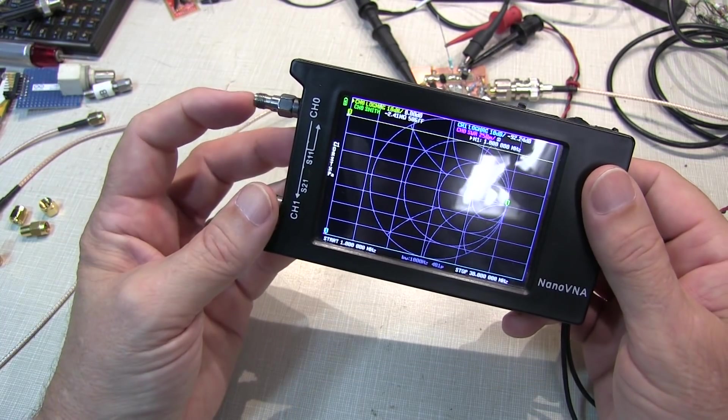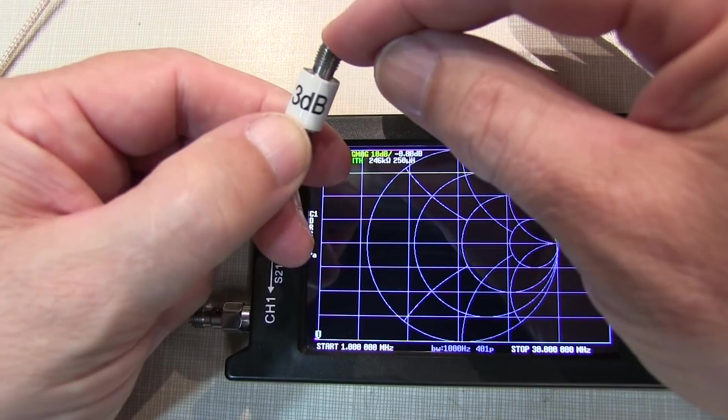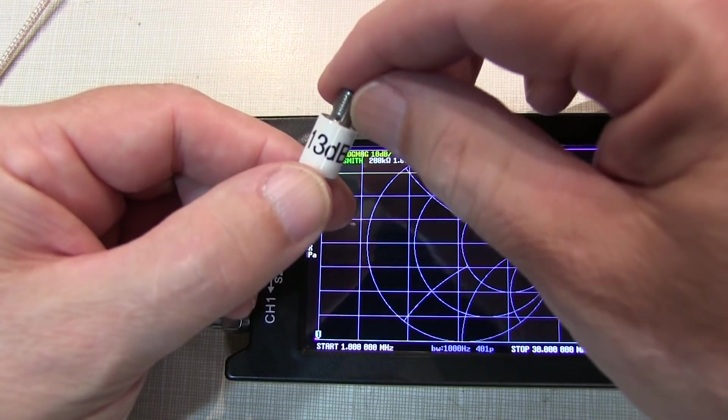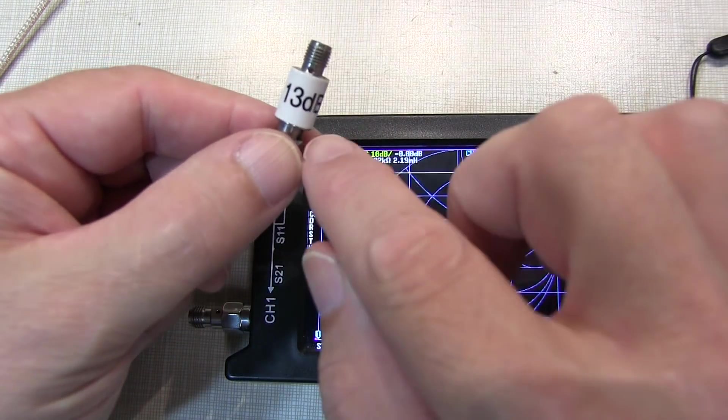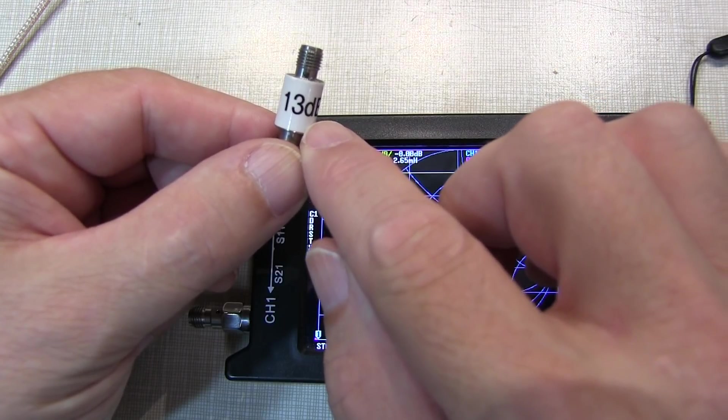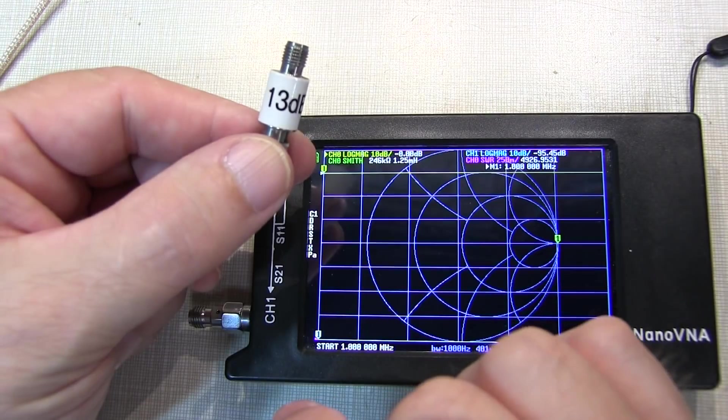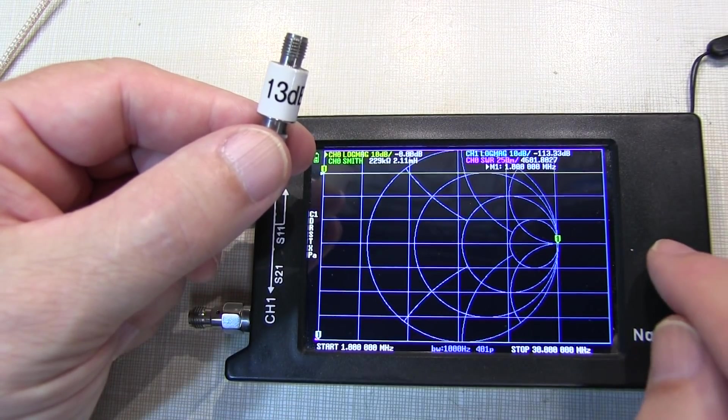So how do we reduce the output amplitude of the NanoVNA? Well, we can apply an attenuator. So I've selected this 13 dB attenuator for two reasons. One is it will attenuate our 600 millivolt output from the NanoVNA down to about 134 millivolts peak-to-peak, and that's well within the range for the amplifier we want to test. And secondly, it's because of another limitation of the NanoVNA.